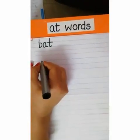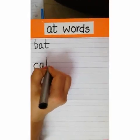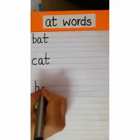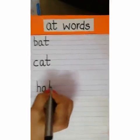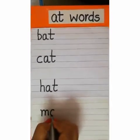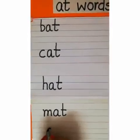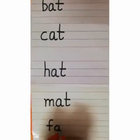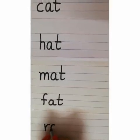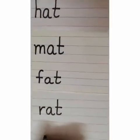After that, the next word we have is cat. Third word is hat. After that we have mat. Next we have fat. After that we have rat. And the next word for today we have sat.